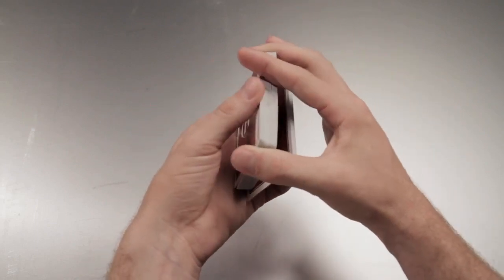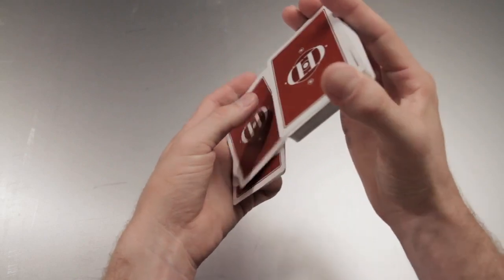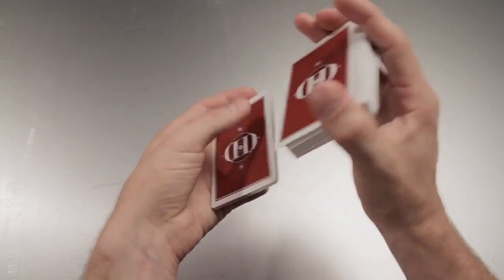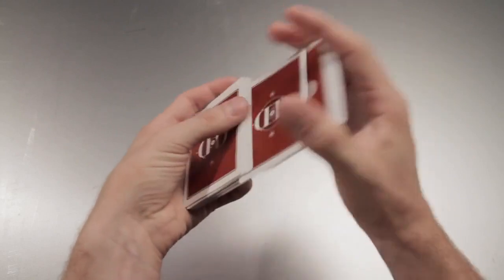Repeat this action by peeling off another small block and then another block until you have no more cards. This is the overhand shuffle.